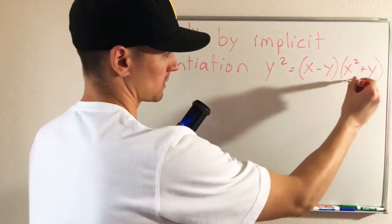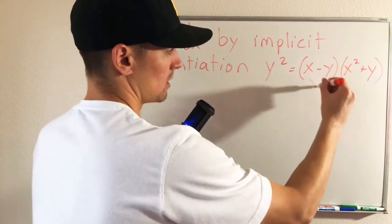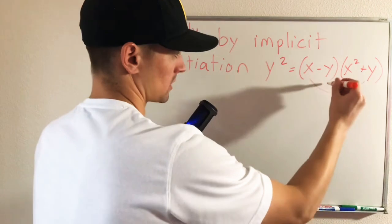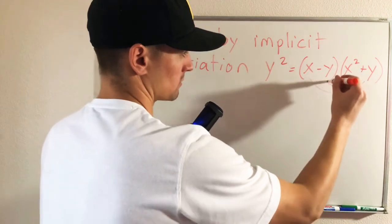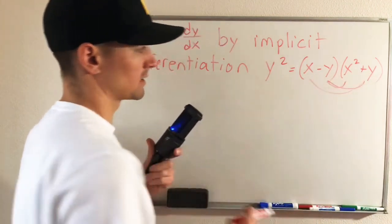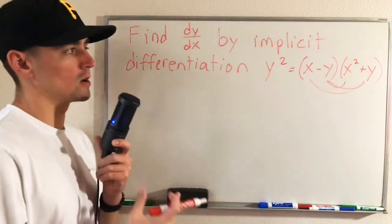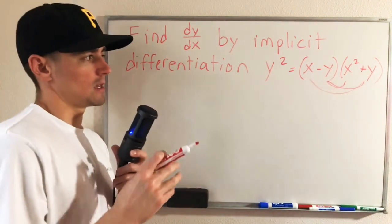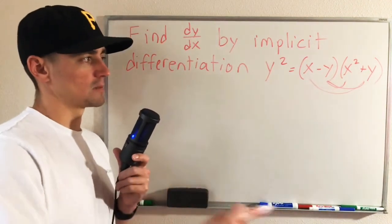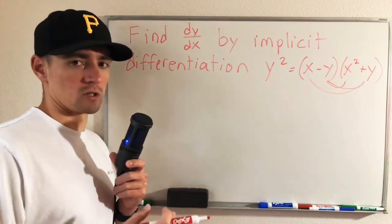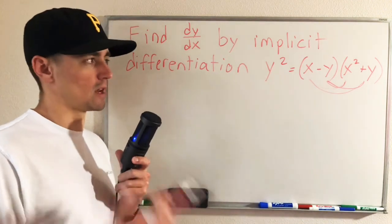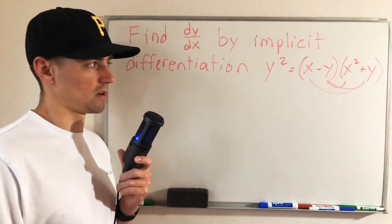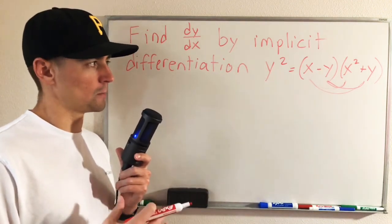So foil that out and get kind of an expanded out version that we could then apply implicit differentiation to.